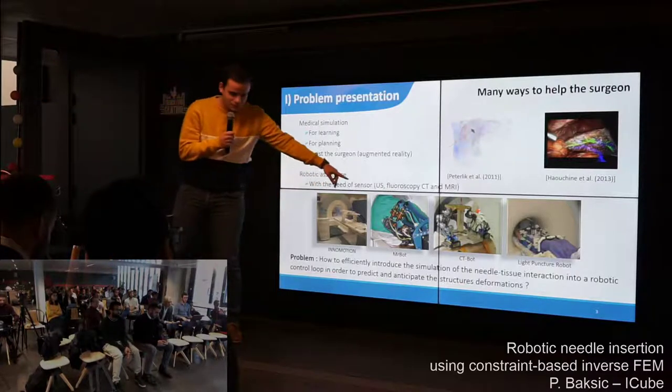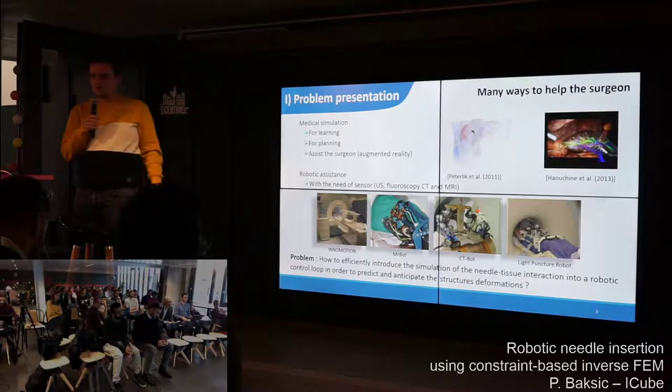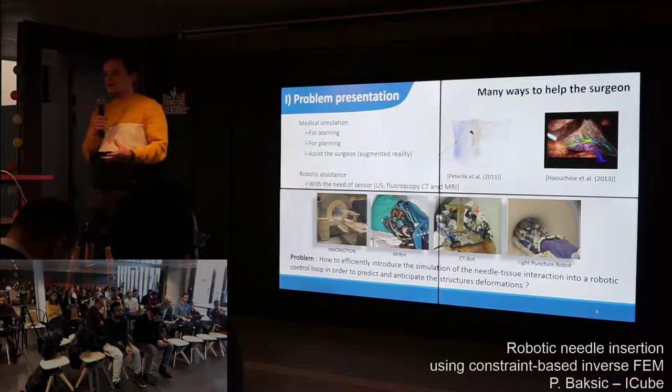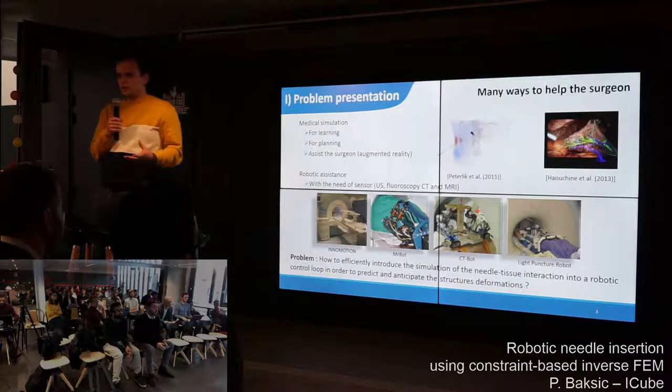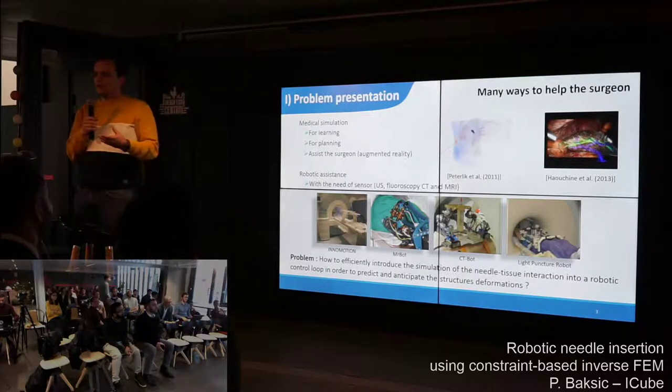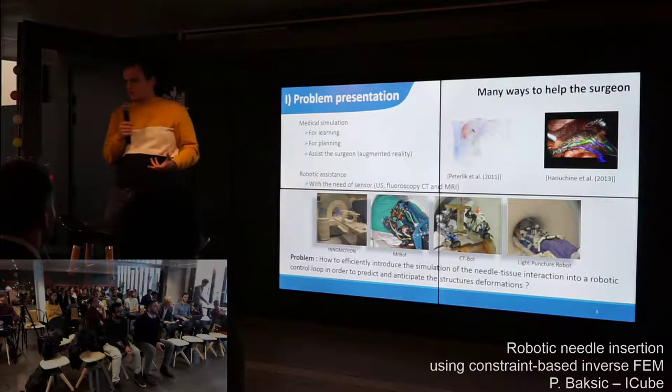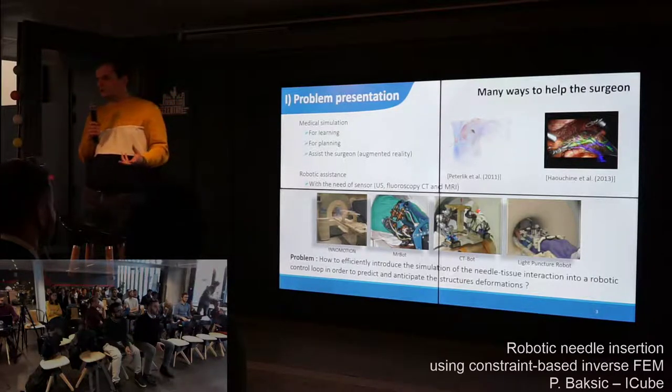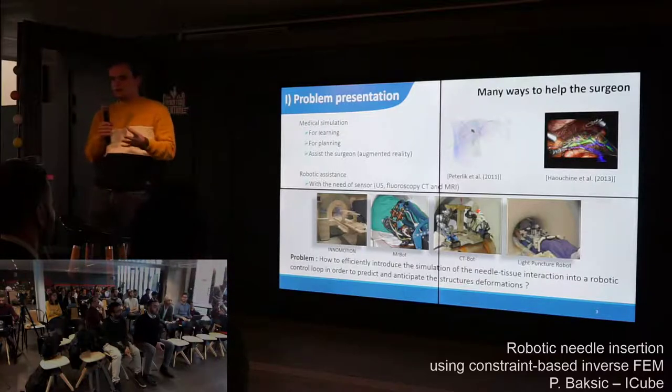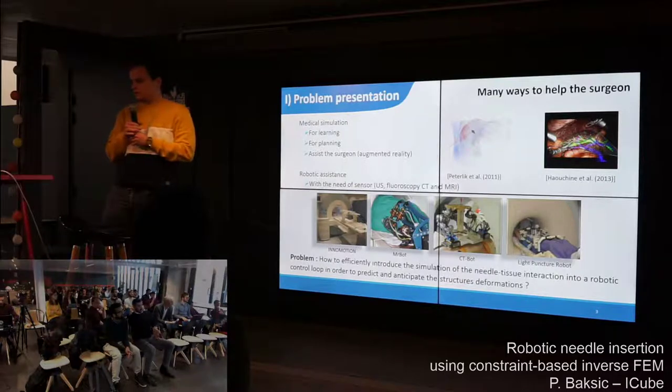There also exist robotic assistants, such as the CityBot developed in the lab. But the problem with these robots is they don't take into account the deformation where they insert. They usually insert the needle during apnea. The problem we want to address is how to efficiently introduce simulation of needle-tissue interaction inside the robotic control loop to predict and anticipate structure deformation.